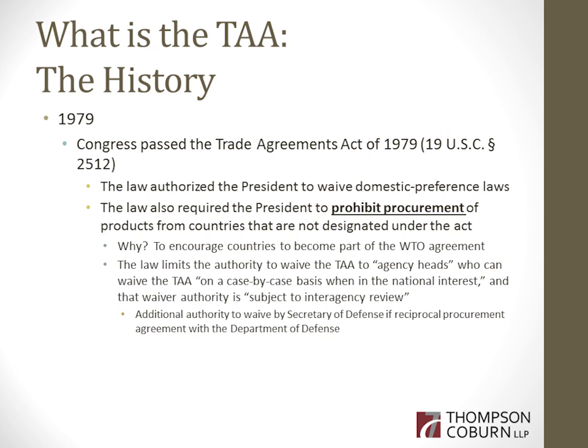In 1979, Congress passed the Trade Agreements Act of 1979 to adopt U.S. obligations under the WTO Government Procurement Agreement. That law authorizes the President to waive domestic preference laws like the Buy American Act. However, it also requires the President to prohibit procurement of products from countries that aren't designated under the Act — a carrot system to encourage countries to become part of free trade agreements.